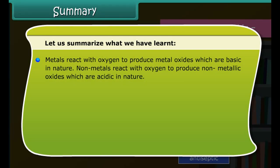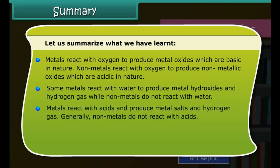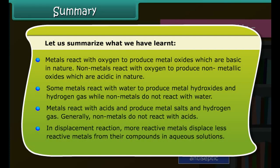Metals react with oxygen to produce metal oxides, which are basic in nature. Non-metals react with oxygen to produce non-metallic oxides, which are acidic in nature. Some metals react with water to produce metal hydroxides and hydrogen gas, while non-metals do not react with water. Metals react with acids to produce metal salts and hydrogen gas; generally non-metals do not react with acids. In displacement reactions, more reactive metals displace less reactive metals from their compounds in aqueous solutions. Metals and non-metals are used widely in everyday life.